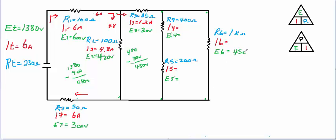Because these resistors are in parallel, I must also have 450 volts from that point to that point. I can now get the current through resistor 6 using Ohm's Law: I6 equals E6 over R6, so 450 volts divided by 1,000 ohms is 0.45 amps through resistor 6. I started with 1.2 amps at this node — 0.45 amps went through R6, so 1.2 minus 0.45 leaves 0.75 amps going through the series resistors R4 and R5.